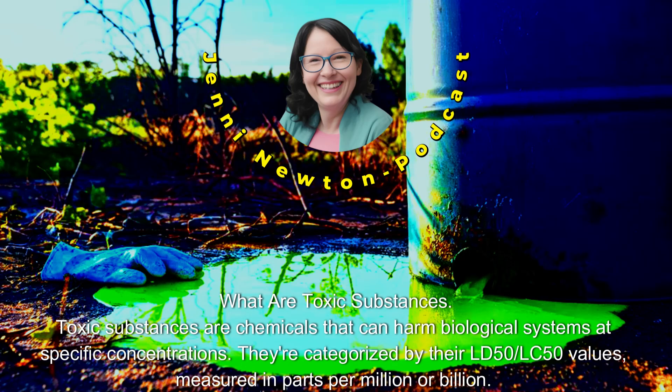What are toxic substances? Toxic substances are chemicals that can harm biological systems at specific concentrations. They're categorized by their LD50 and LC50 values, measured in parts per million or billion.